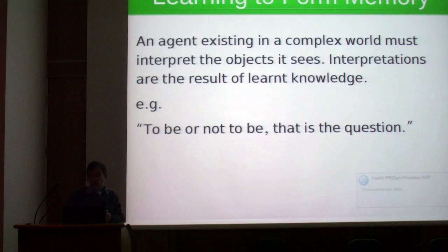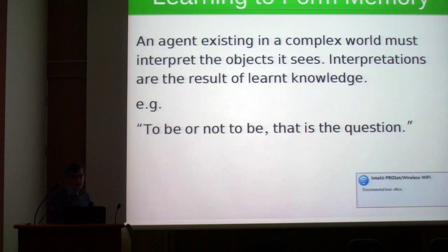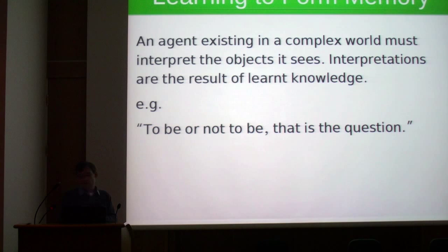I want to talk about where memory comes from, how we learn memory, and how we can represent memory in our CREST architecture. It's fairly obvious that any agent in a complex world must interpret objects that it sees, and these interpretations are by and large a result of the knowledge that you've learned.